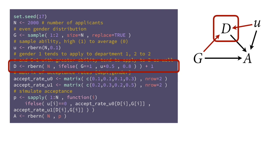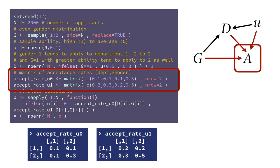We simulate the choice of department since we have its parents G and U simulated. For simplicity, there are just two departments. Gender 1 tends to apply to department 1 and gender 2 tends to apply to department 2. But individuals of gender 1 who are of high ability — U equals 1 — have a 50% chance of applying to department 2, which is the discriminatory department. Individuals of gender 1 are discriminated against in admission in that department. But when they're of high ability, they think they can overcome that.